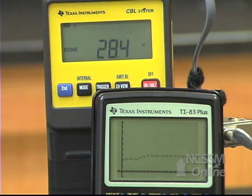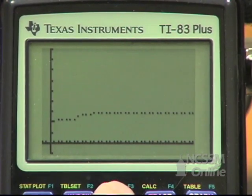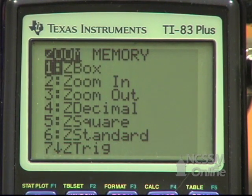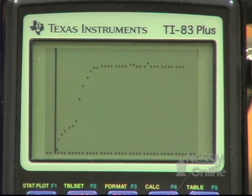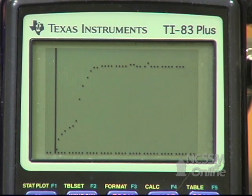When the CBL says done, press zoom on the calculator and number 9 to auto scale the graph to your data.